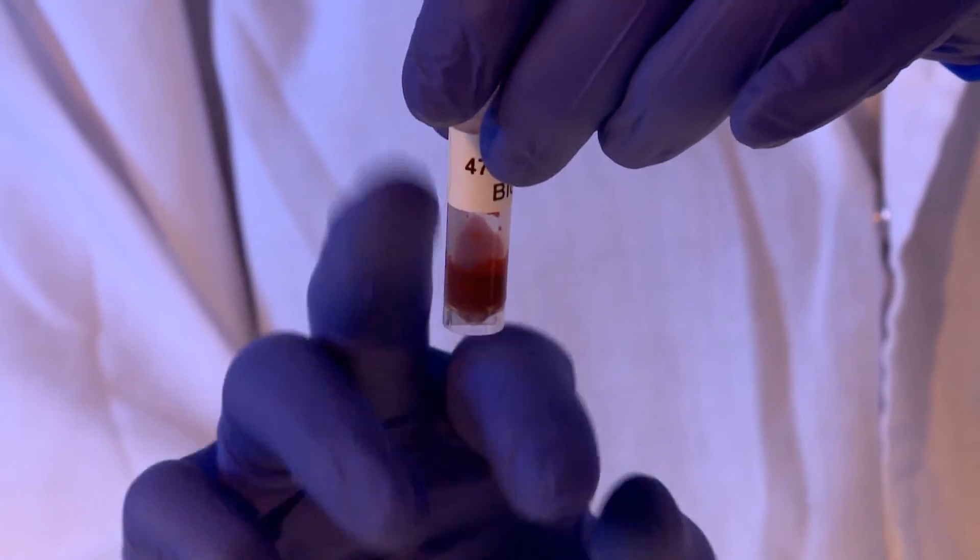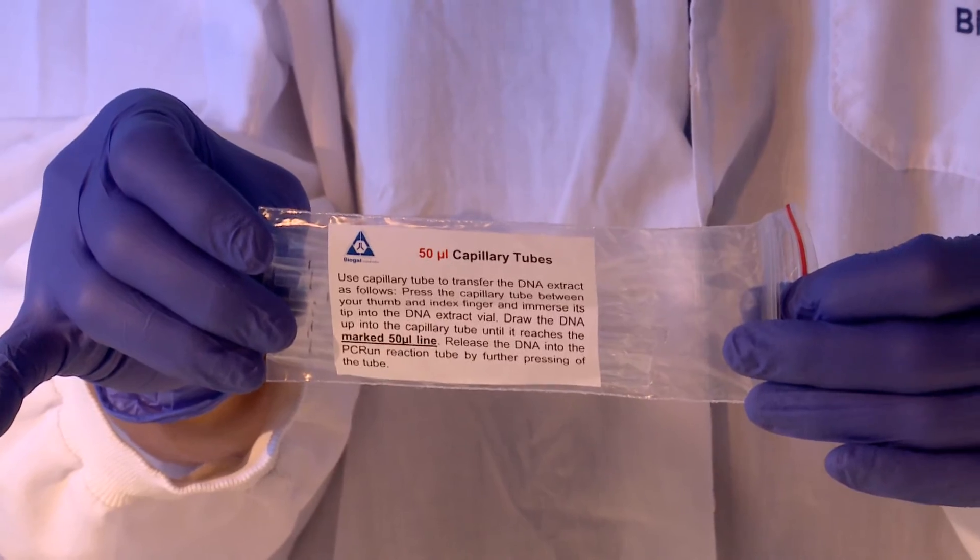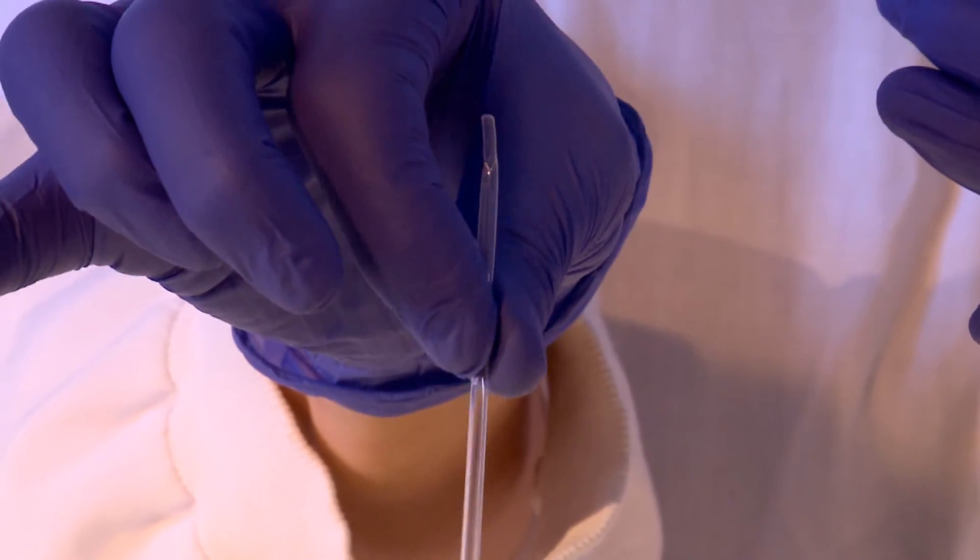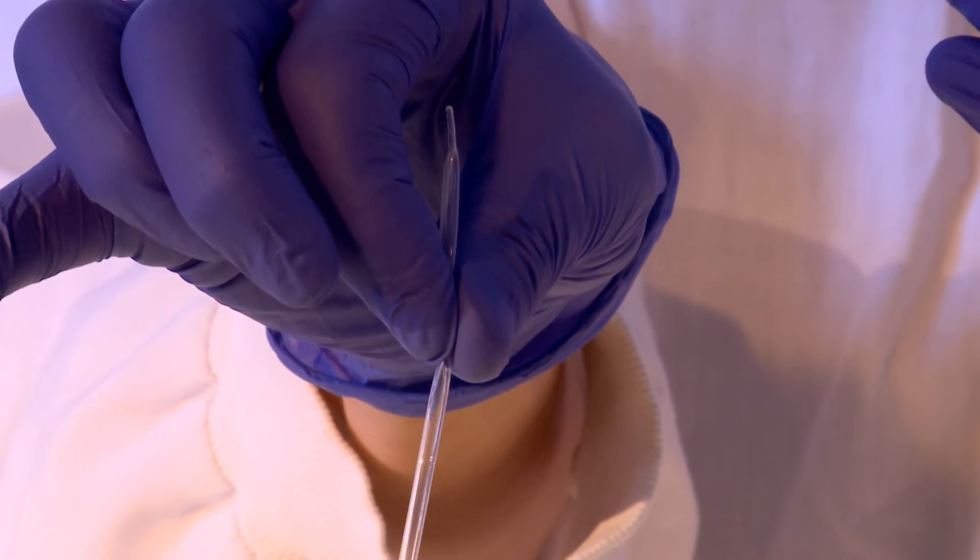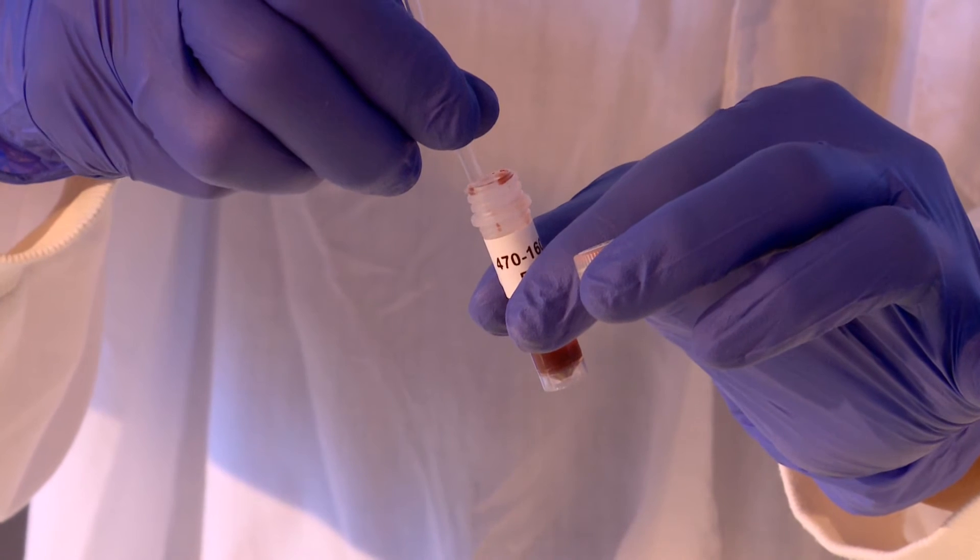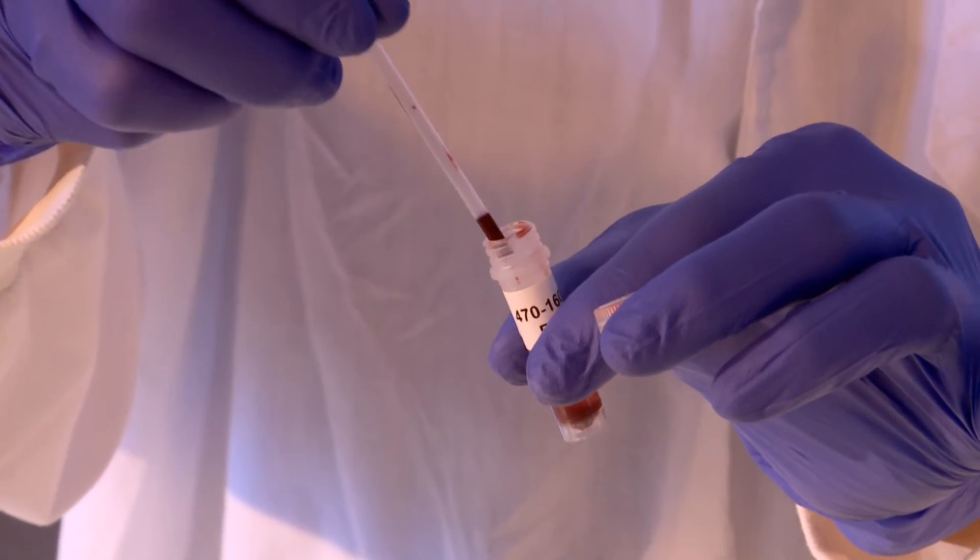Mix the blood sample thoroughly, then using the disposable capillary tubes, remove 50 microliters of blood. This is performed by first depressing the capillary tube while outside of the sample, then placing the tip into the blood sample and releasing the pressure until blood is drawn up to the level of the black line.